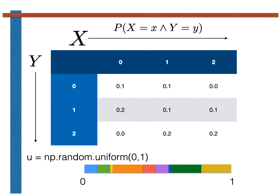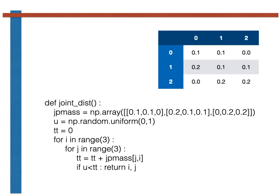The value of the two random variables is then decided based on the segment of the line that the continuous random variable U falls within. The way that this would be coded within Python is shown here. This line creates a two-dimensional Python array to hold the joint probability mass function. To visualize this two-dimensional array, think about the table shown at the top of the slide. Two indices are required to specify which element of the array we would like. The first index tells us which row number is required while the second tells us the column number.